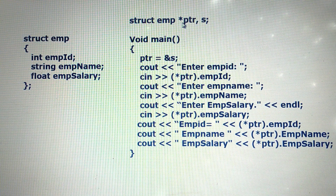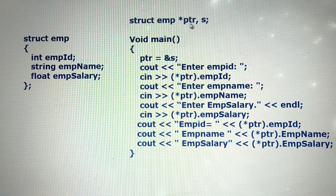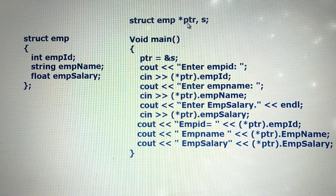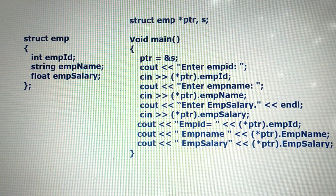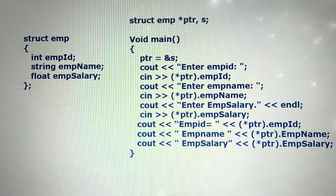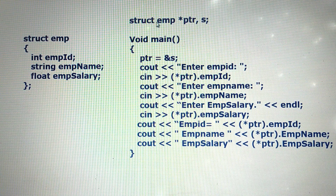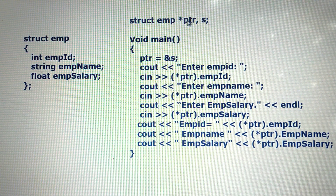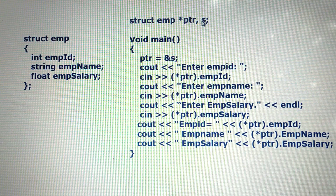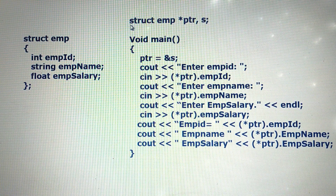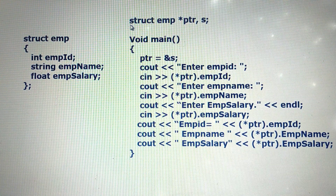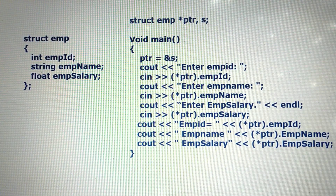Then give the pointer variable and object: a normal variable, a structured variable, and a pointer variable. A structure pointer is defined by placing the star mark in front of the pointer's name — star PTR. Then give the object of the structure. That is how we declare the structure pointer and object.